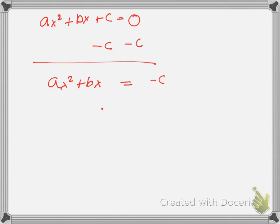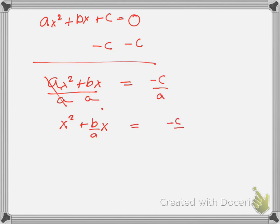What would be my next step? So we're going to divide all terms by A. Here it cross-cancels. I'm left with X squared plus B over A. My pet peeve is when you line up the X in the denominator — the X is in the numerator. Equals negative C over A.